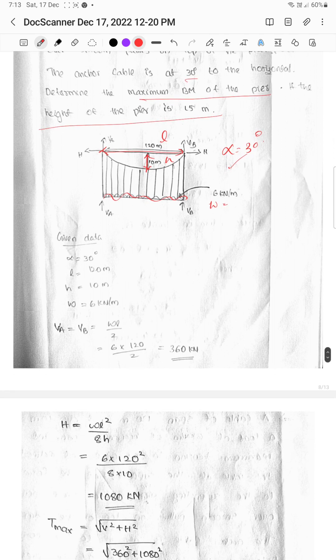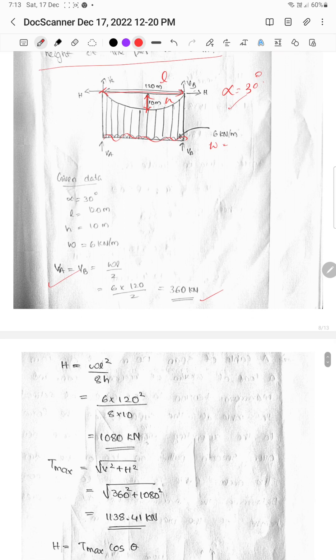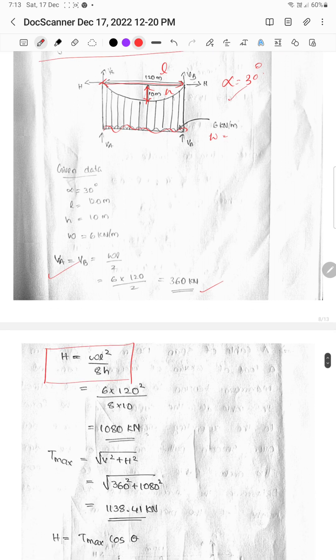V is equal to VB, which is WL by 2. We can calculate the value of H. The value of H is W times L squared by 8h.